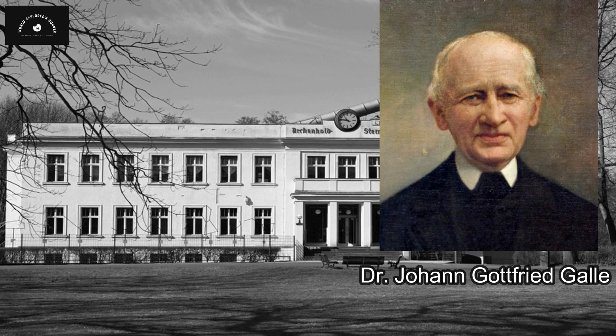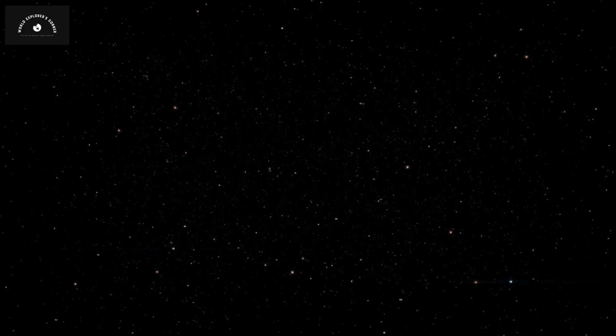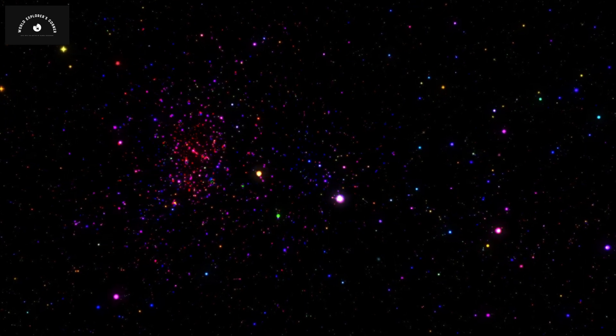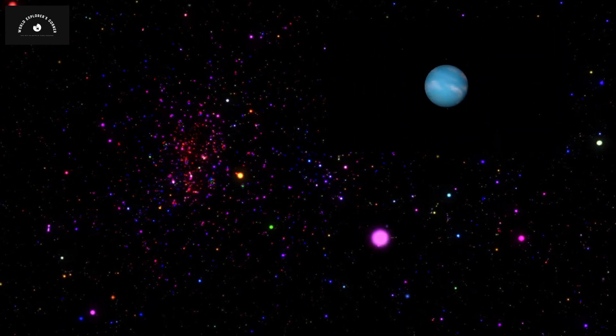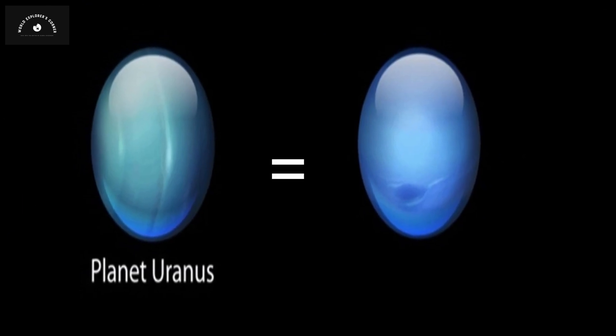Dr. Johann Gottfried Galle of the Berlin Observatory, upon scrutinizing the designated area, initially observed nothing but a dark expanse. However, with greater focus, he identified a blue planet precisely where Le Verrier had predicted.